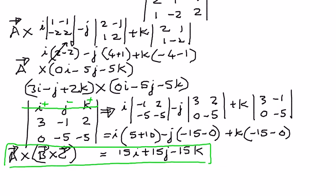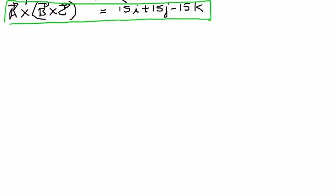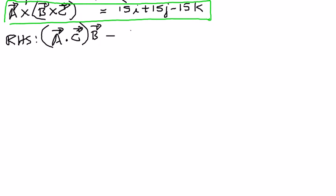We have solved the left-hand side of the expression. Now we take the right-hand side and see what we get. The right-hand side is (a dot c) times vector b, minus (a dot b) times vector c. We will substitute the known component values.